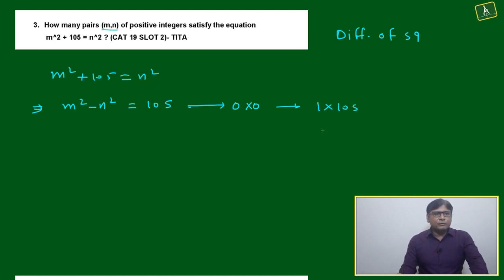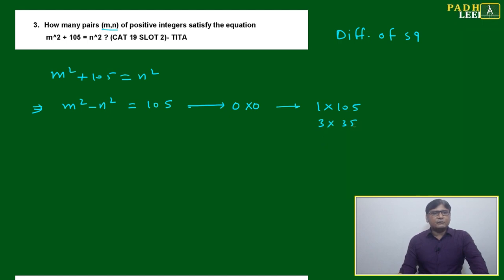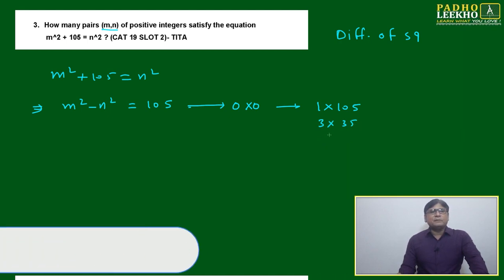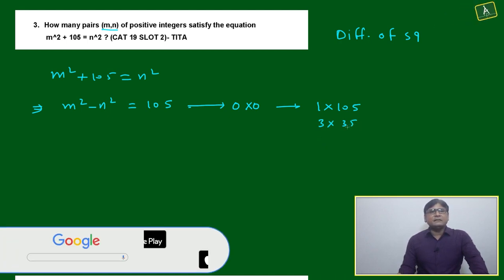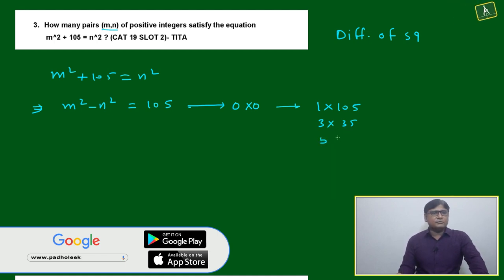I'll show you a super fast trick. We start writing: 1×105, 3×35, then 5 goes to that side and it becomes 7×... we can also write 5×21.